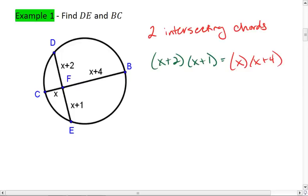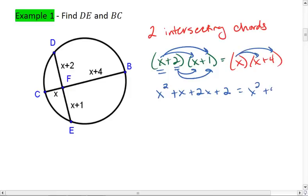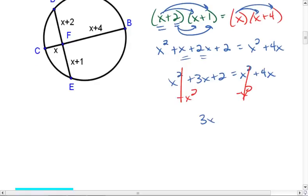To solve, we do need to FOIL or distribute. So we get X squared plus X plus 2X plus 2 equals X squared plus 4X. We can subtract an X squared from both sides, which now gives us 3X plus 2 equals 4X. I'm going to subtract a 3X from both sides. I get 2 equals X,